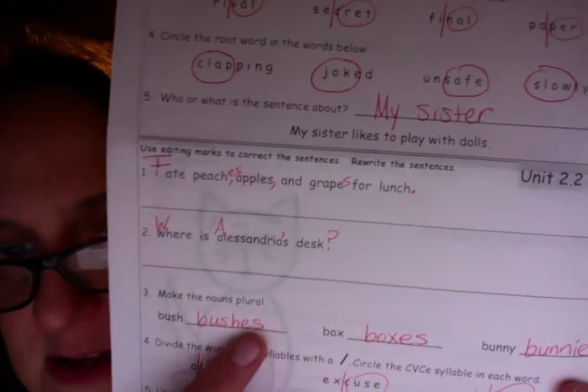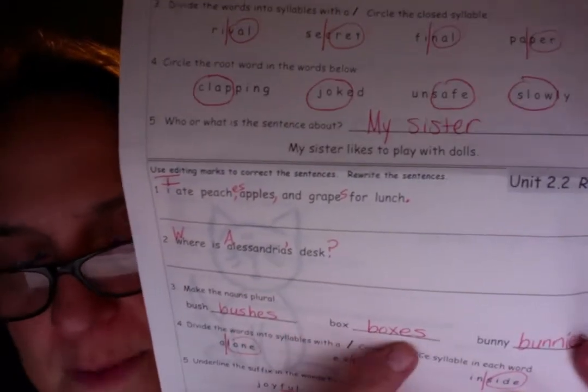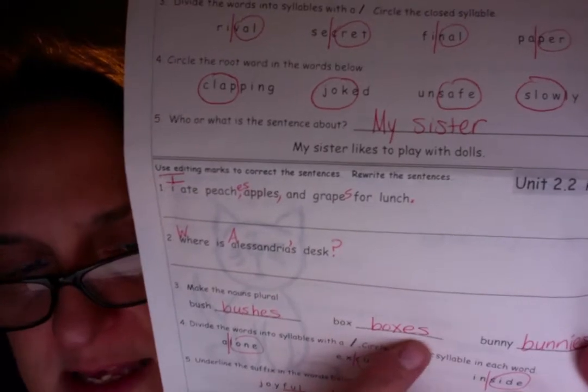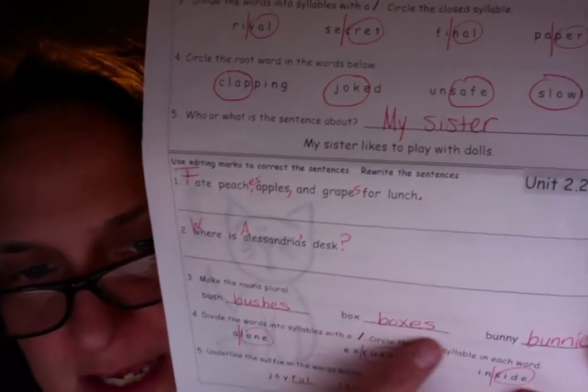And number three. Make these plural. Bush becomes bushes with an E-S. Because it ends with an S-H, right? Box becomes boxes with an E-S. B-O-X-E-S. It had an X. So a special ending gets that E-S.